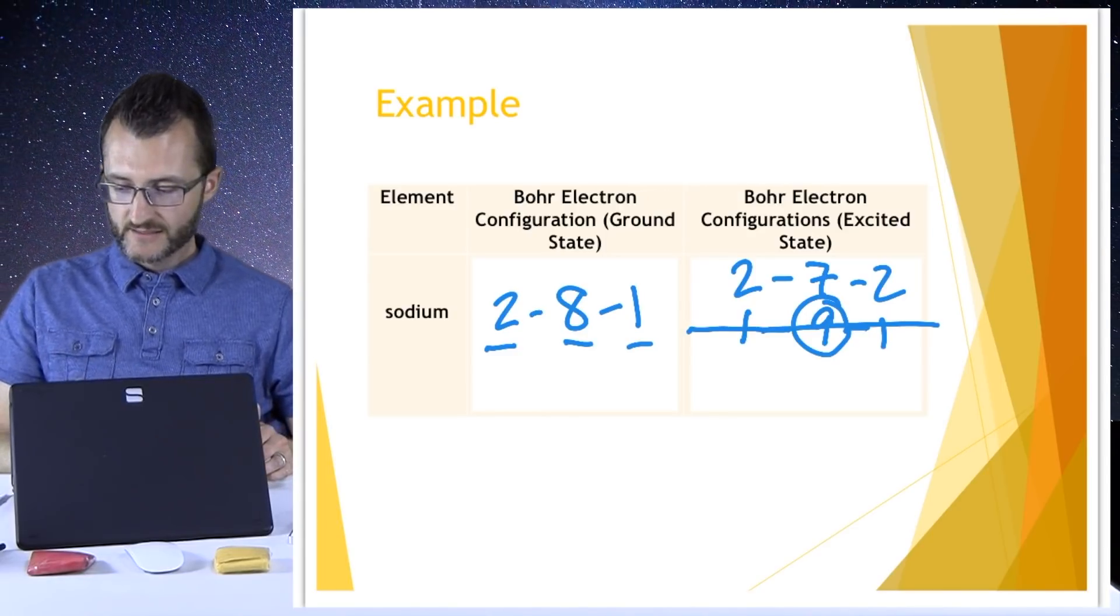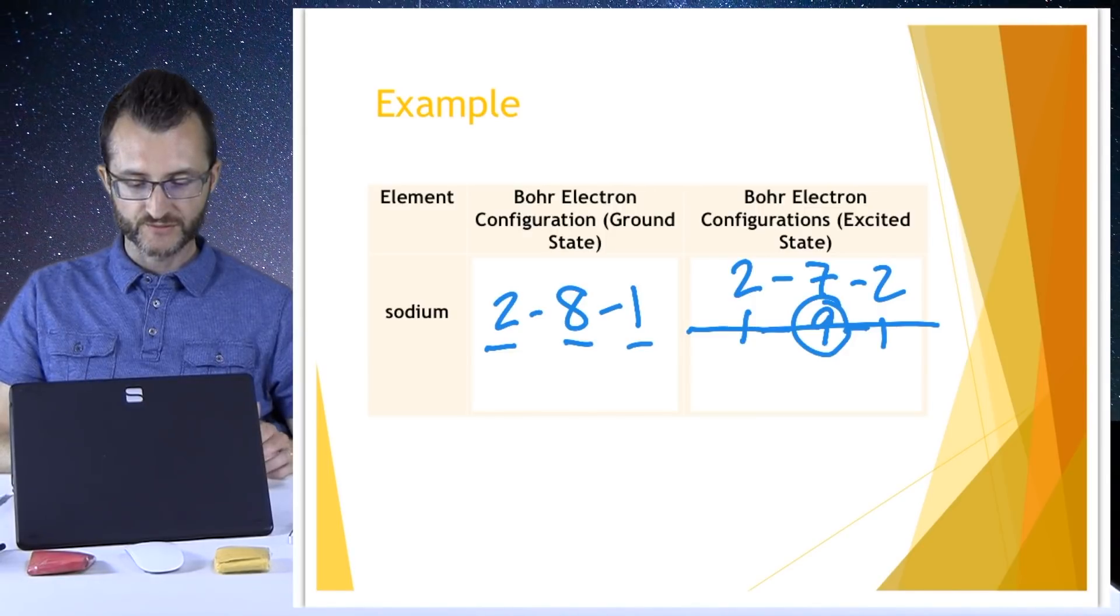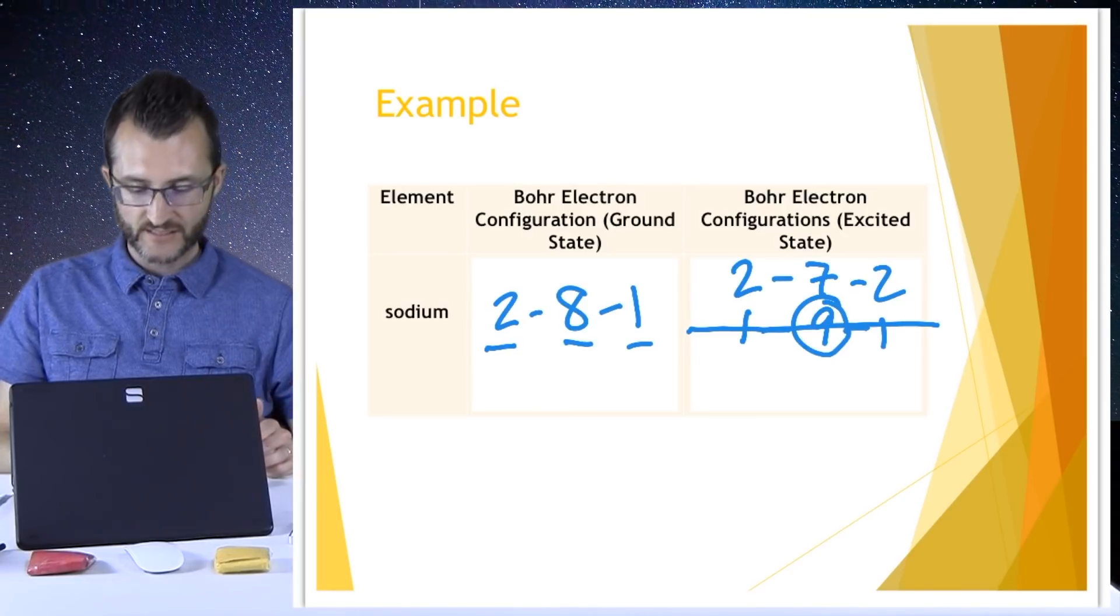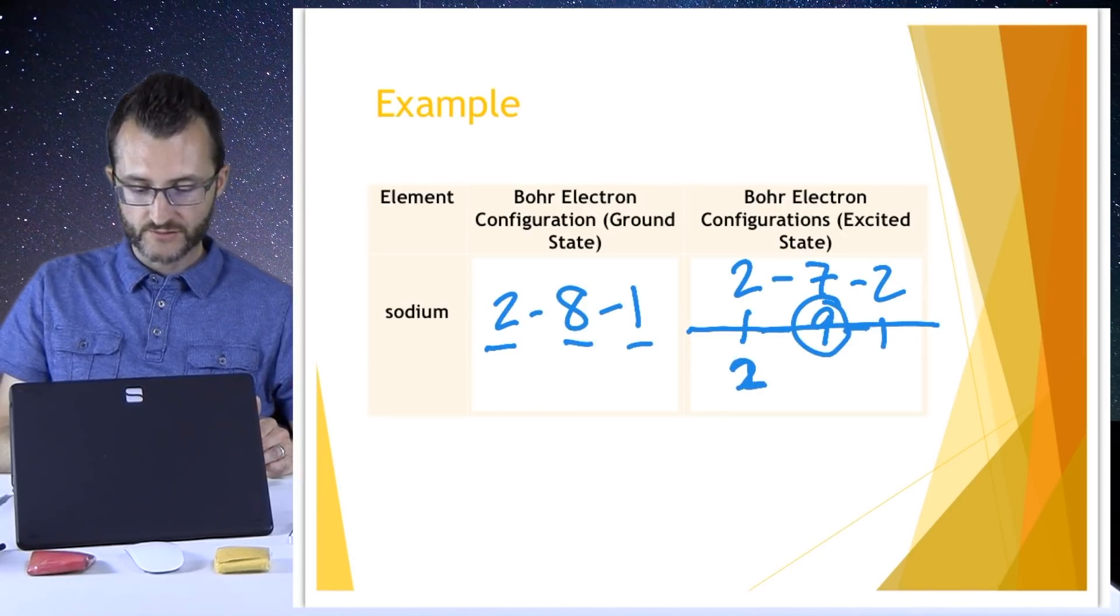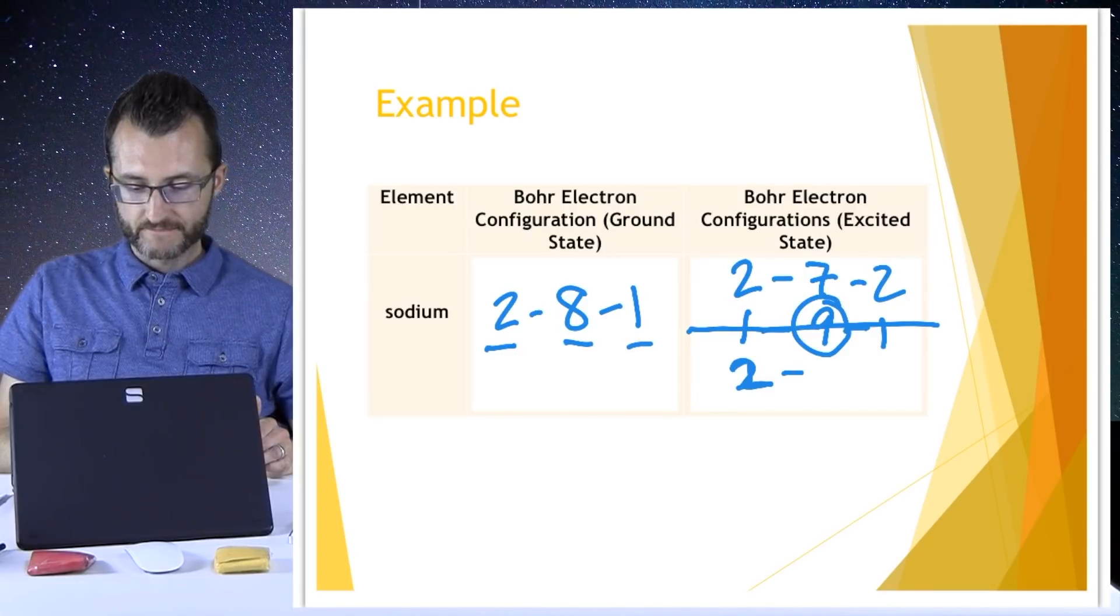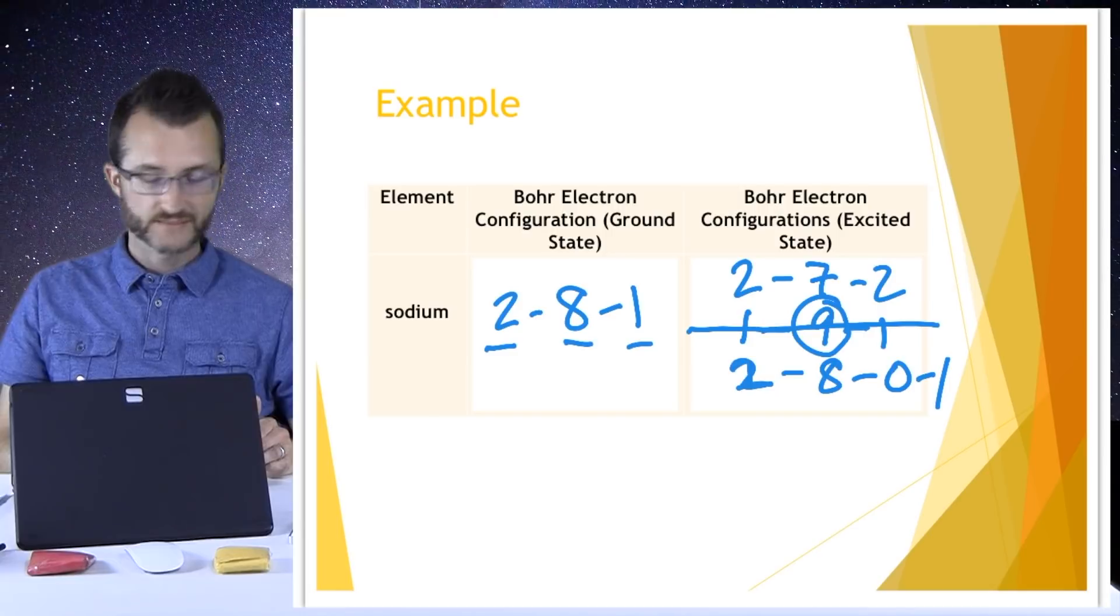Let me try a different one then. Can I move an electron from the third energy level to like an empty fourth energy level? Absolutely. Two, eight, zero, one. That works.